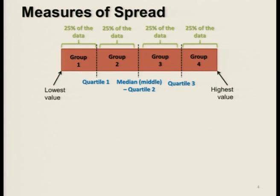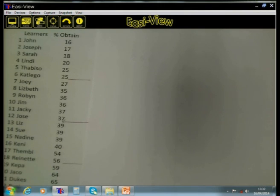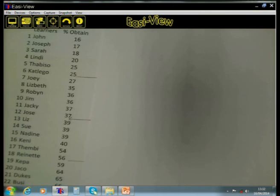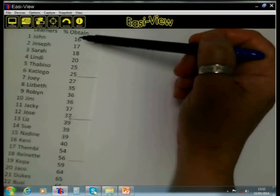Here is a summary of the measures of spread. We are going to get our median which divides the data into two equal groups, and then divide on each side of the median again into two equal groups, ending up with four equal groups where each group contains 25% of the data. I am giving you here the marks of 24 learners — the percentages they obtained for a mathematical literacy test, already arranged from smallest to highest value.